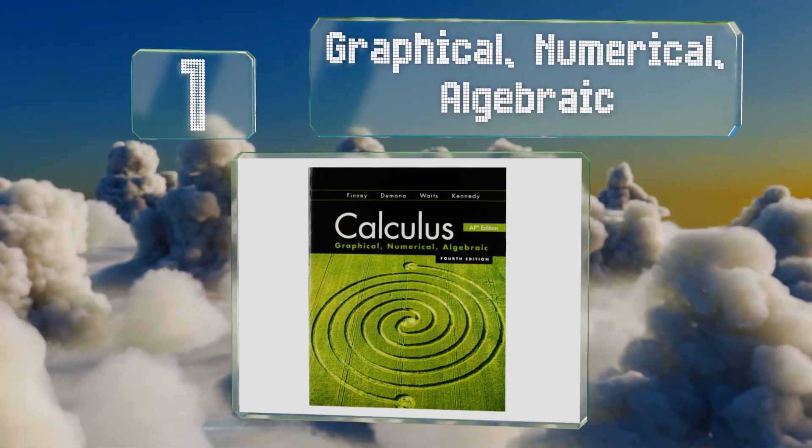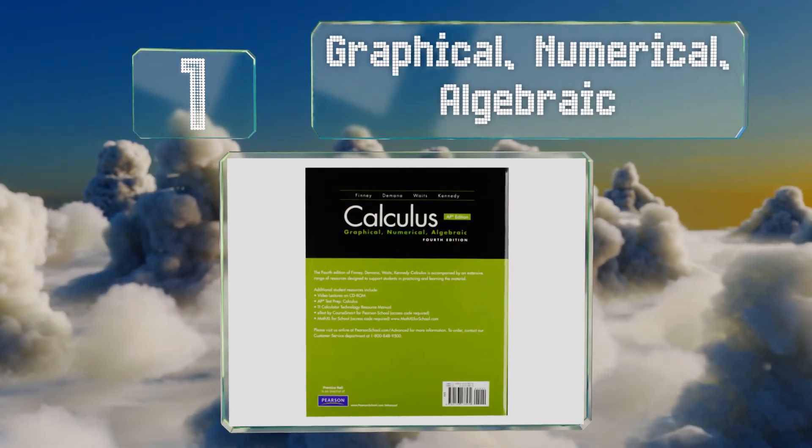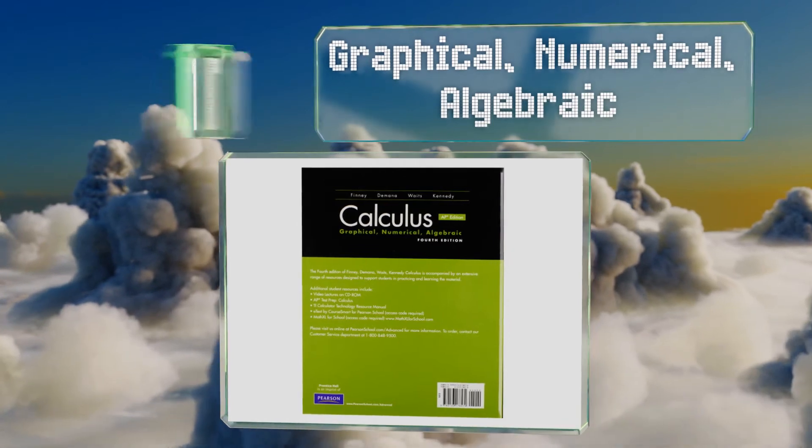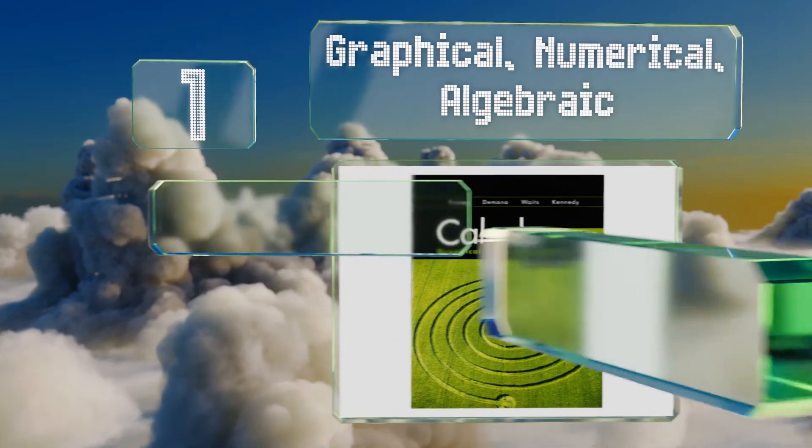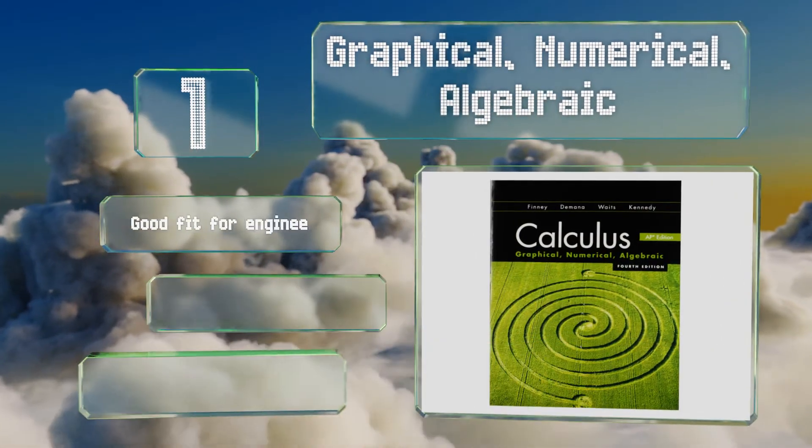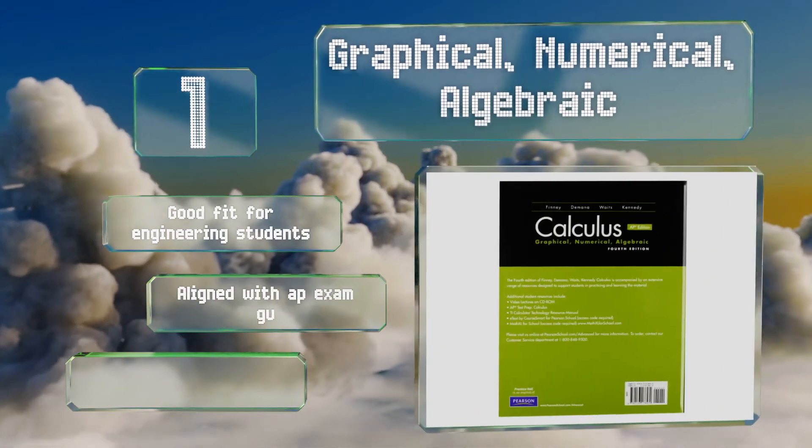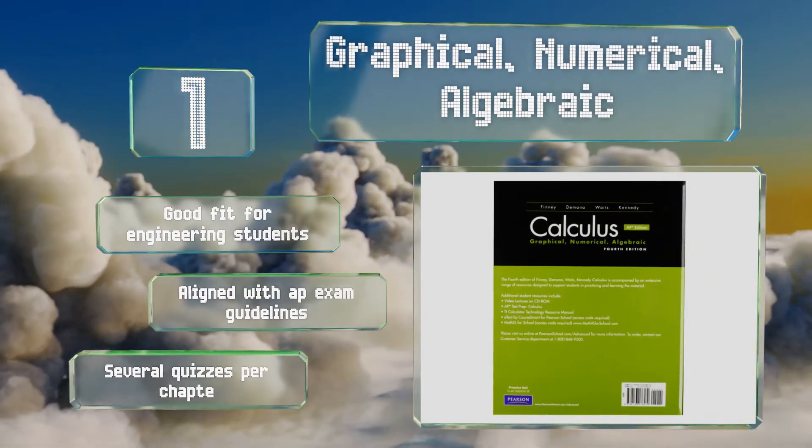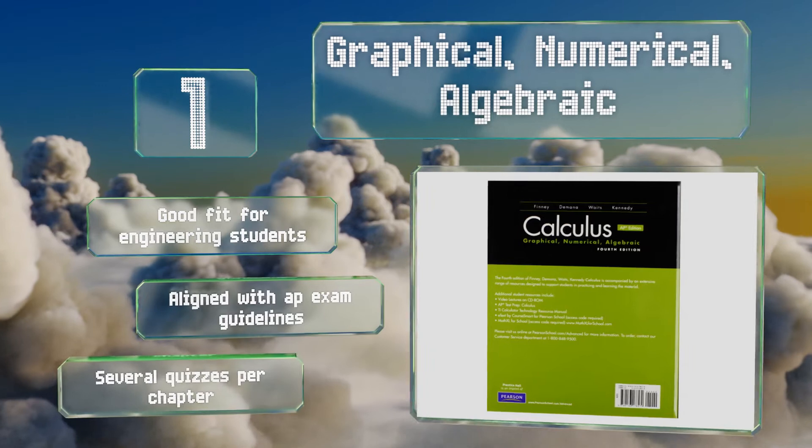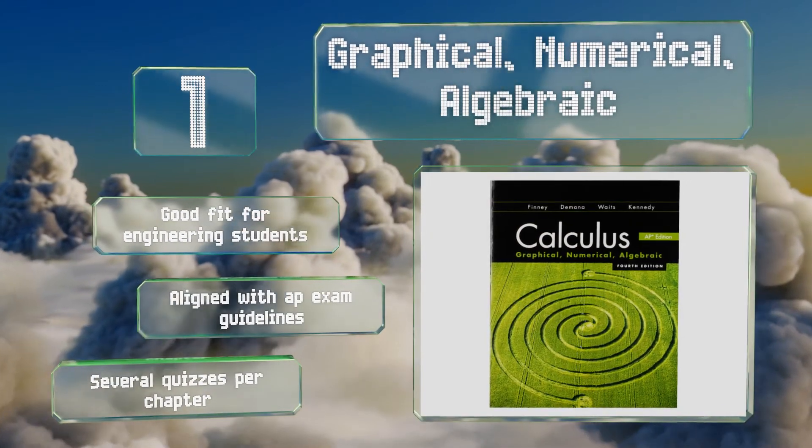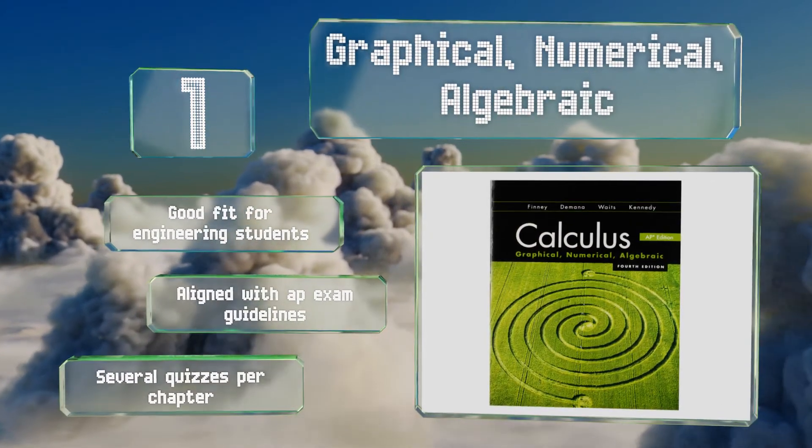And taking the top spot on our list, if you prefer textbooks that get straight to the point, Graphical, Numerical, Algebraic doesn't bury its concepts in flowery language or extended examples. This keeps the illustrations simple, which makes it less likely to confuse beginners. It's a good fit for engineering students and is aligned with AP exam guidelines. It contains several quizzes per chapter.